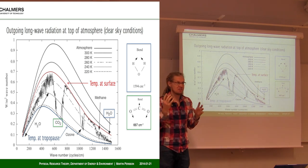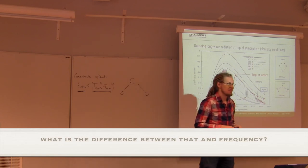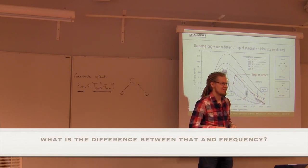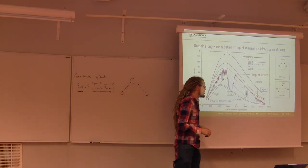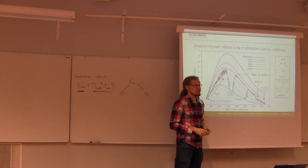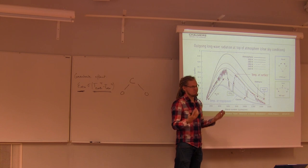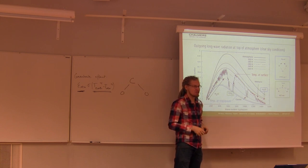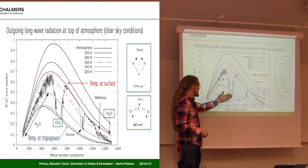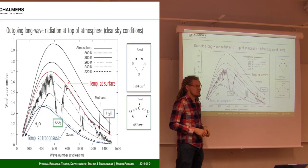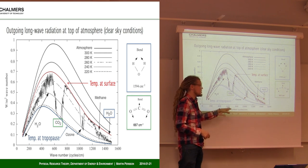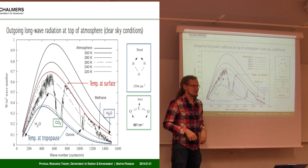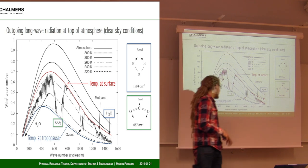Frequency measures oscillations per second, but since the speed of light is constant, wave number conveys the same information — it's oscillations per centimeter. It's just a number that's easier to work with in this area. It's the inverse of wavelength, so the higher the wave number, the shorter the wavelength.